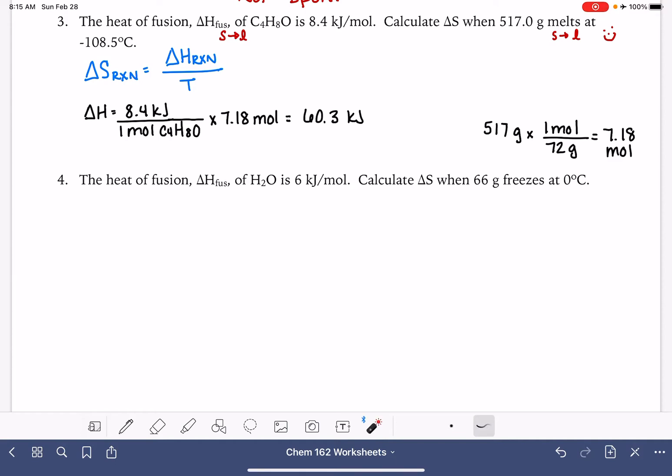So now what we're going to do is just plug that number in to our delta S, 60.3 kilojoules divided by our temperature, which is negative 108, but we want to make sure that that's in units of Kelvin. So we're going to add 273.15, and that gives us a positive 164.65 Kelvin. 60.3 divided by that temperature is a delta S of 0.366. The units are kilojoules per Kelvin.